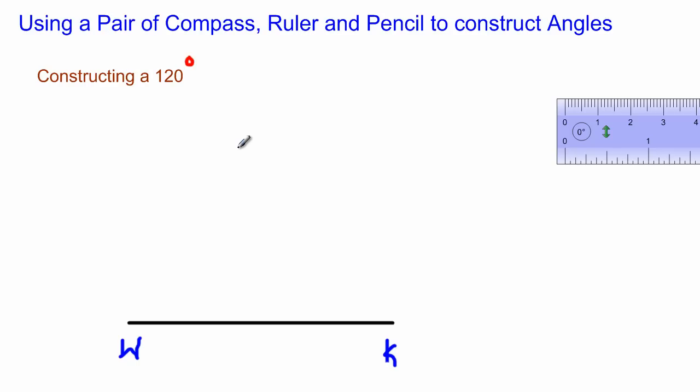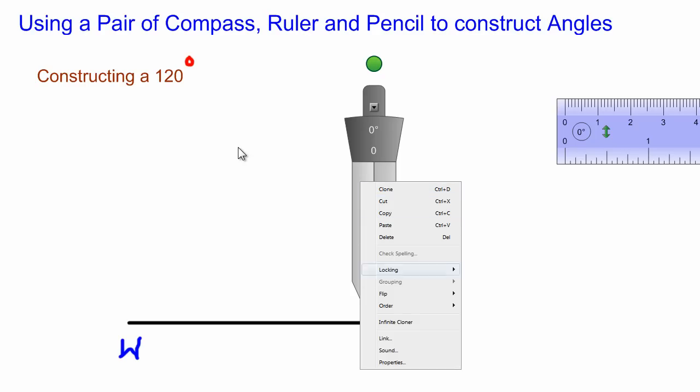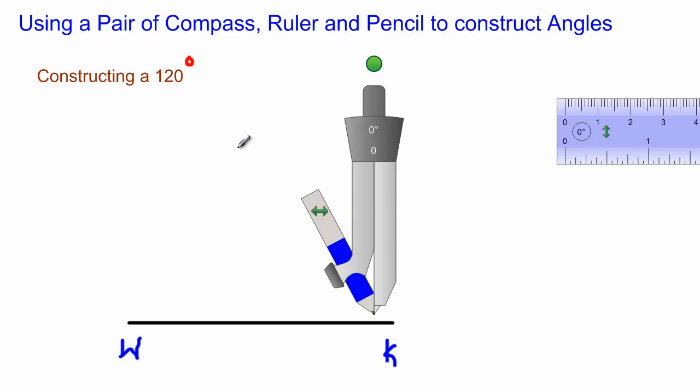What if we were asked to construct a 120 degree angle at the point K? That's pretty easy. Let's just look at it quickly. I would take out my pair of compass and let's just flip this a bit so that we have it in the right direction.